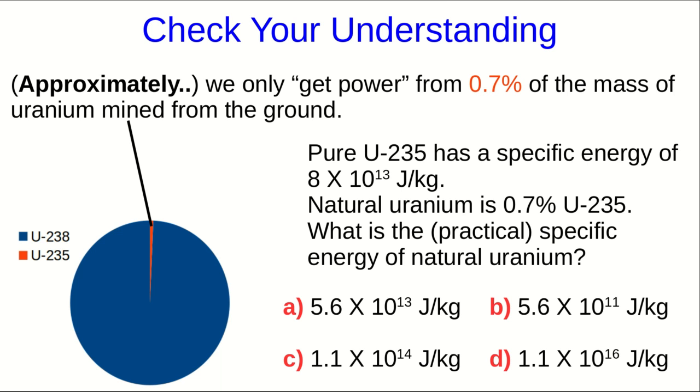So, pure U235 has a specific energy, as we've seen, of about 8 times 10 to the 13 joules per kilogram. But natural uranium is only 0.7% U235. So use that to get a more practical specific energy of natural uranium.